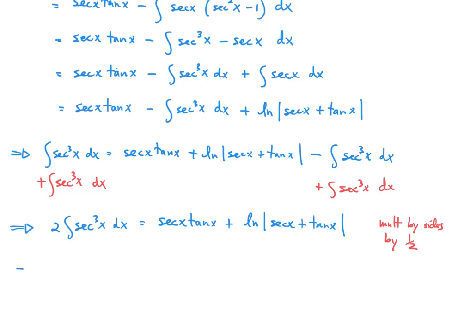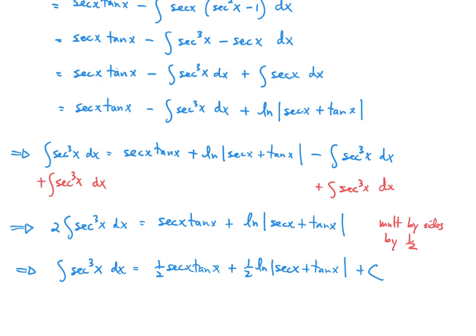So the integral of secant cubed x dx equals one half secant x tangent x plus one half times the natural log of the absolute value of secant x plus tangent x, plus C. This integral does show up occasionally, so keep an eye out for secant cubed x dx — if it shows up in a homework question, you can just use this formula.